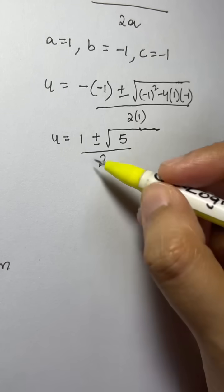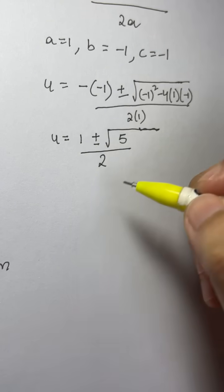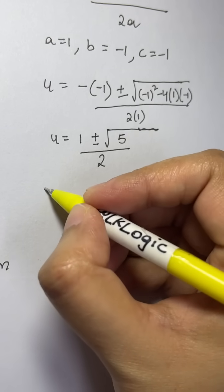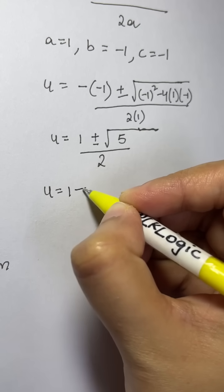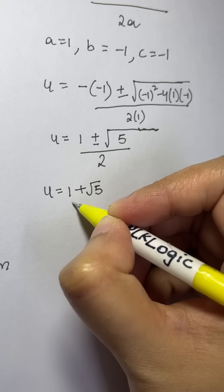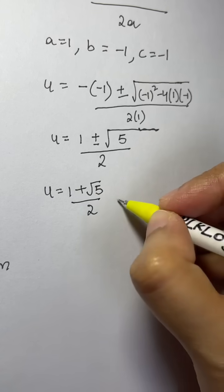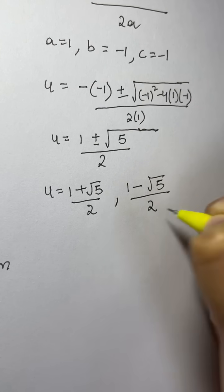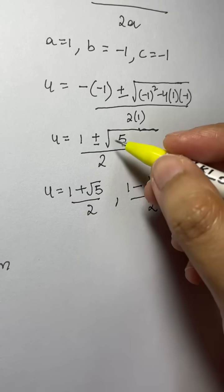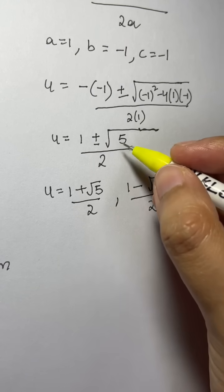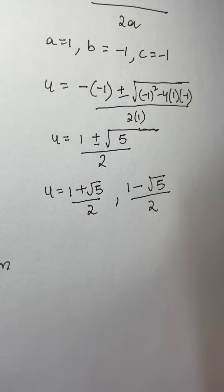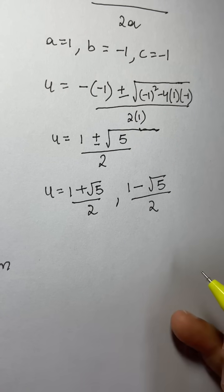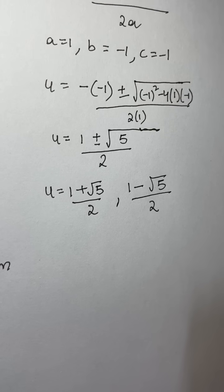So u equals (1 plus square root of 5) over 2, or u equals (1 minus square root of 5) over 2. This expression (1 plus or minus square root of 5) over 2 is called the golden ratio. Now we'll substitute back, since we had defined something as u.